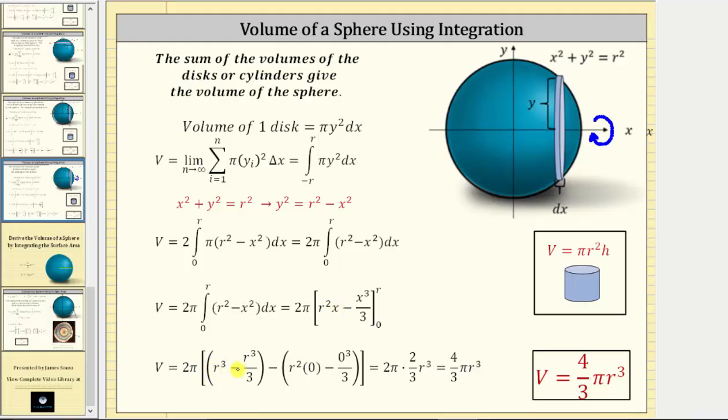minus, substituting r for x here, gives us r cubed divided by three, minus, and now we find big F of zero by substituting zero for x, which gives us r squared times zero, minus zero cubed divided by three.